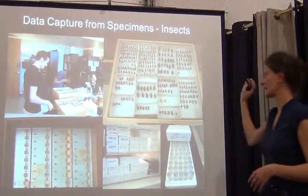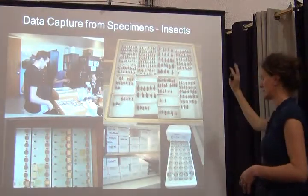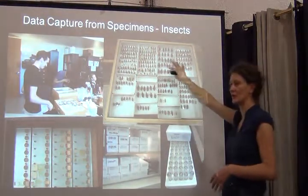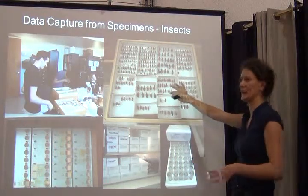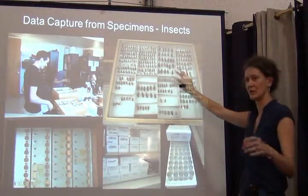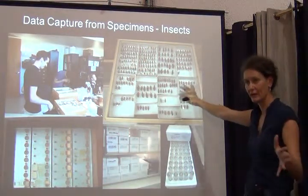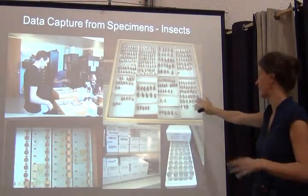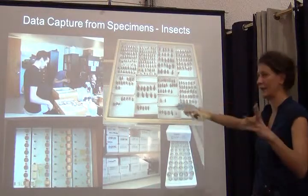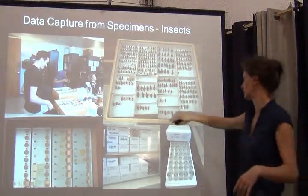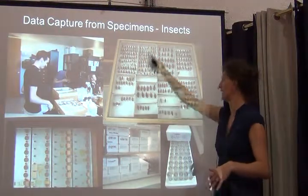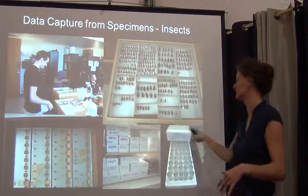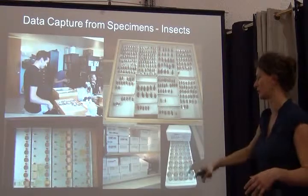When you look at insect collections, the great majority of material is going to be dry and prepared in different ways — dry and in what we call unit trays. That would be a unit tray; the entire thing is called an insect drawer.